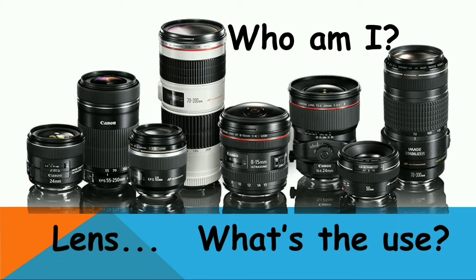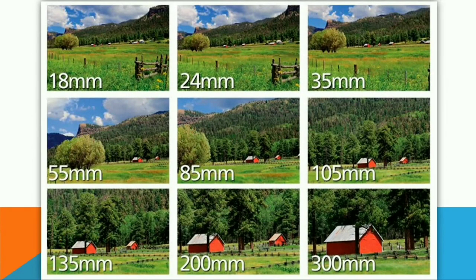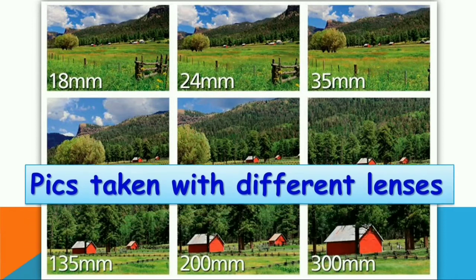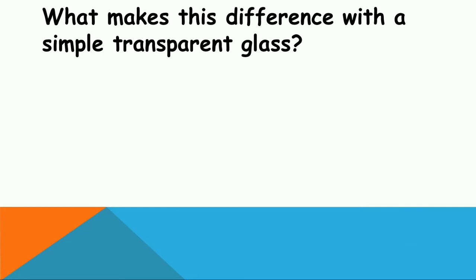Check the numbers on the lenses — they are 24 mm, 250 mm, 300 mm, and so on. The bottom picture shows the same location photographed with different lenses: from 300 mm, 200 mm, 135, 105, all the way down to 18 mm. So these are pictures of the same location taken with different lenses. How is this possible? What makes this difference with a simple transparent glass?